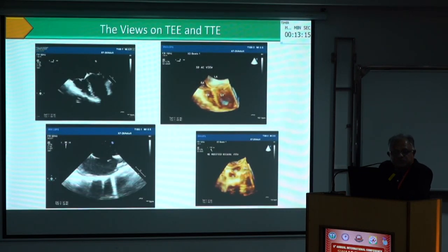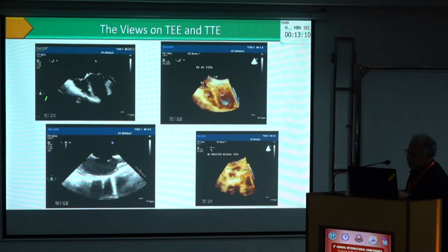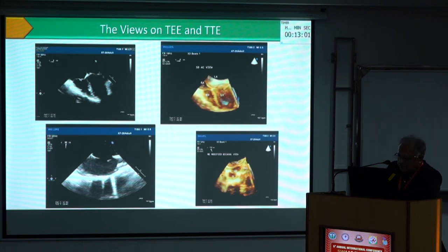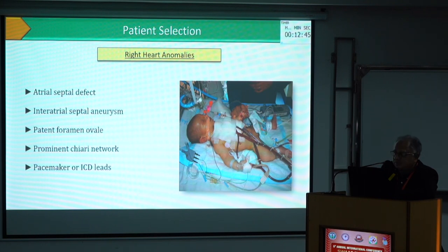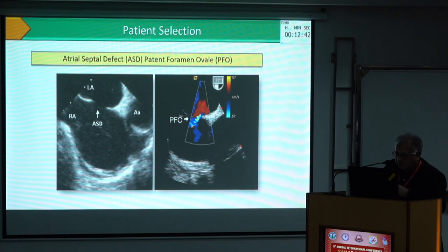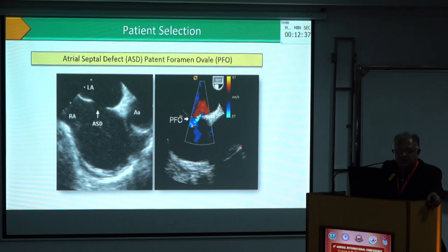Here you can see the transoesophageal views — 4-chamber view on the left side, a 3D view of the same, and a bicaval view where you can see the ASD. Placement of the cannula is where these views are important. We have to rule out certain congenital cardiac anomalies, particularly ASDs where shunting would increase, including interatrial septal aneurysms, Chiari network, and recently placed ICD or pacemaker leads as relative contraindications.